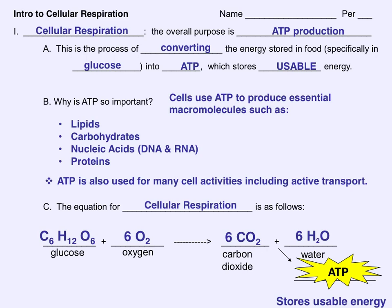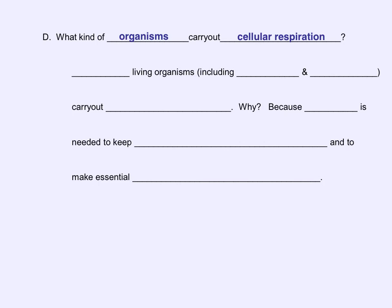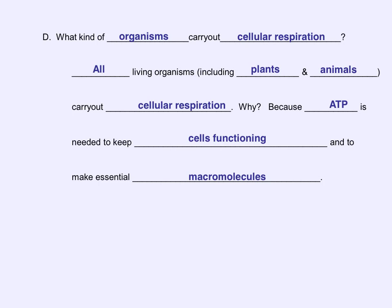The equation for cellular respiration is: C6H12O6 plus 6O2 gets converted into 6CO2 plus 6H2O and ATP. Circle and label glucose and oxygen as the reactants, and circle and label carbon dioxide, water, and ATP as the products. Remember that all living things, including plants and animals, carry out cellular respiration because ATP is needed to keep cells functioning and to make essential macromolecules.